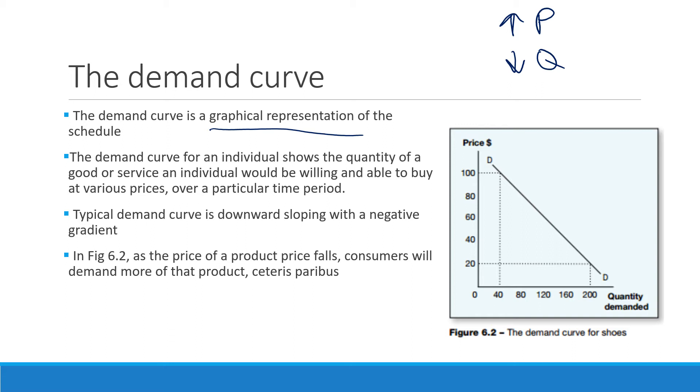It's a negative line. It's downward sloping. So our law of demand is held within this graph, within this curve, and this demand curve shows the quantity at different price points.